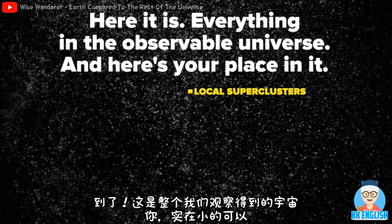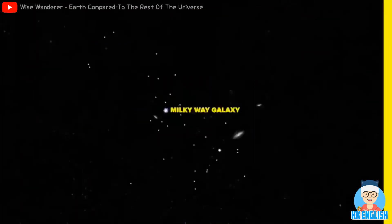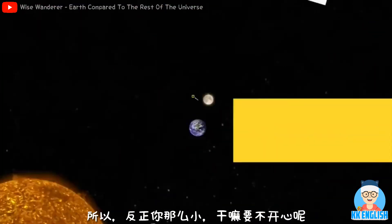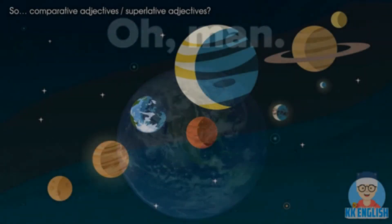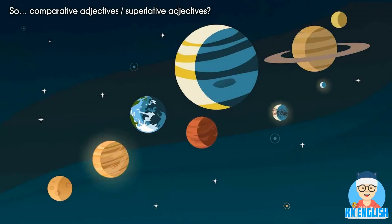Here it is — this is what we can see of the entire universe. We are really, really small. Alright, now we have learnt that our galaxy is so, so, so big.